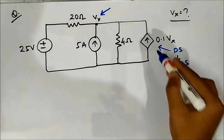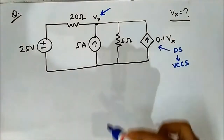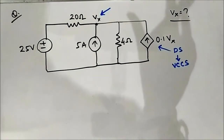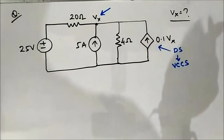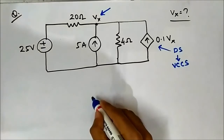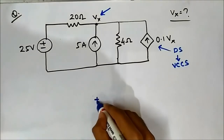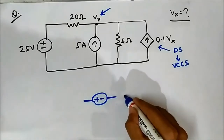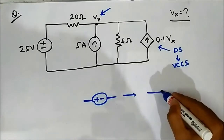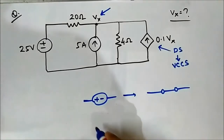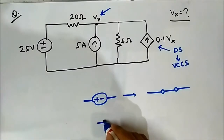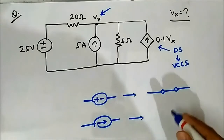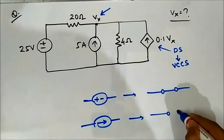You cannot deactivate a dependent source — it will be kept as it is. A voltage source is deactivated by replacing it with a short circuit, and a current source is deactivated by replacing it with an open circuit.